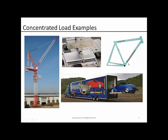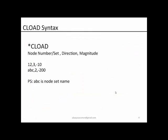Bicycle frames are another example where the load is more like a concentrated force. You also see car transportation utility vehicles where a lift gate shifts the vehicle from the ground into the carrier, and the load transfer occurs through a single point contact between a tire and the lift frame — also a candidate for a concentrated load example.